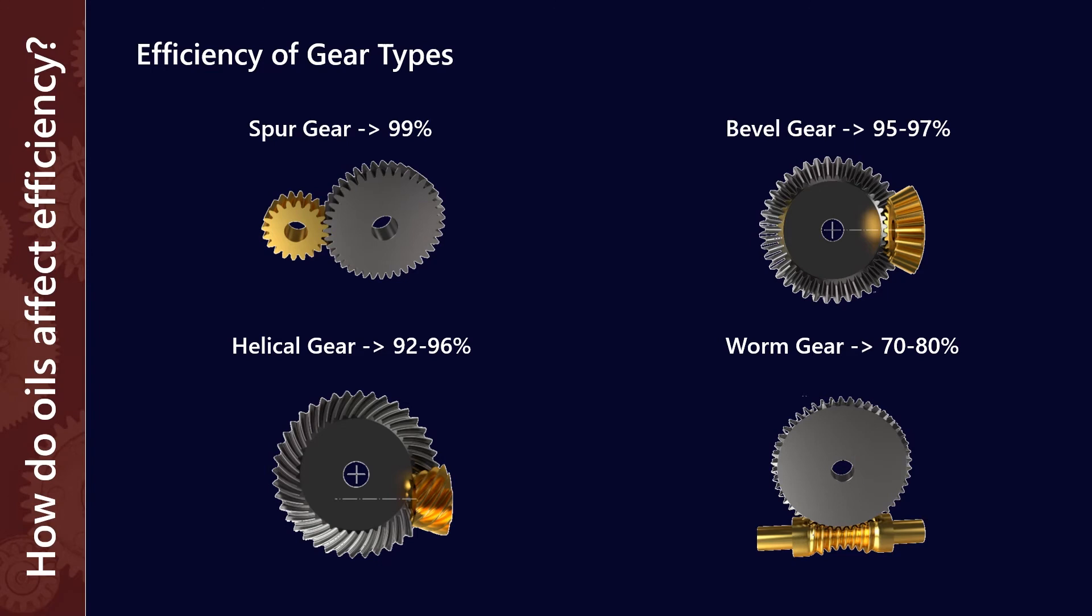Bevel gears are also reasonably efficient in the base case, as are helical gears. I realize that's not quite a picture of a helical gear, I couldn't quite find one, I know that's a hypoid. But these are all in the high 90s in terms of efficiency.